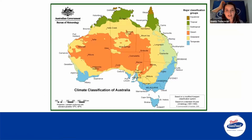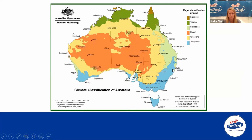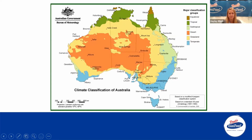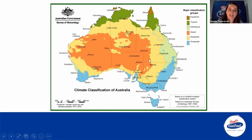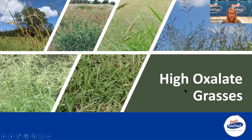Moving on to our high oxalate grasses, we've got a graph here. Looking at subtropical and tropical grasses — the dark green and light green — this is where most high oxalate grasses are found. However, in the temperate grasses down through New South Wales to Victoria, we do have our kikuyu grasses as well. And throughout the orange and yellow areas you've got your buffel grasses. Pretty much this graph is telling us no one's safe, but there are different levels of oxalate in each grass.